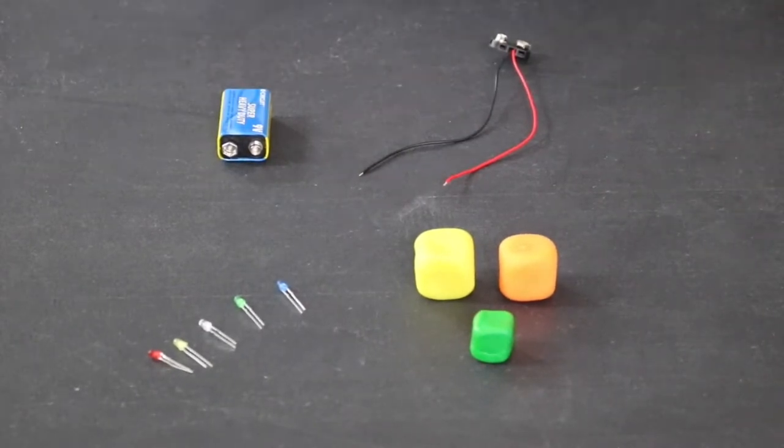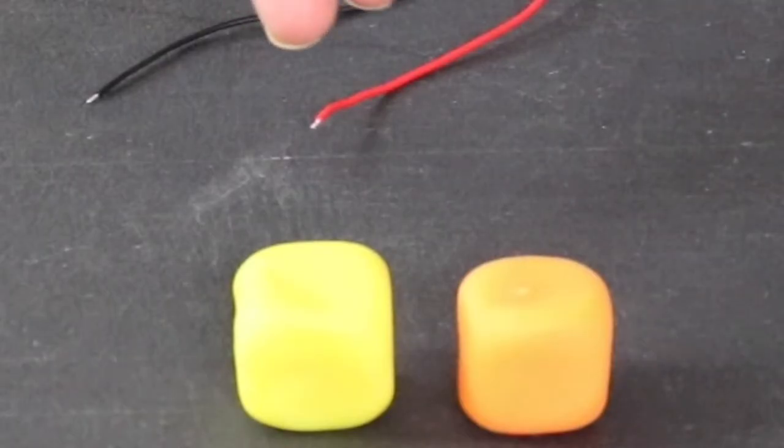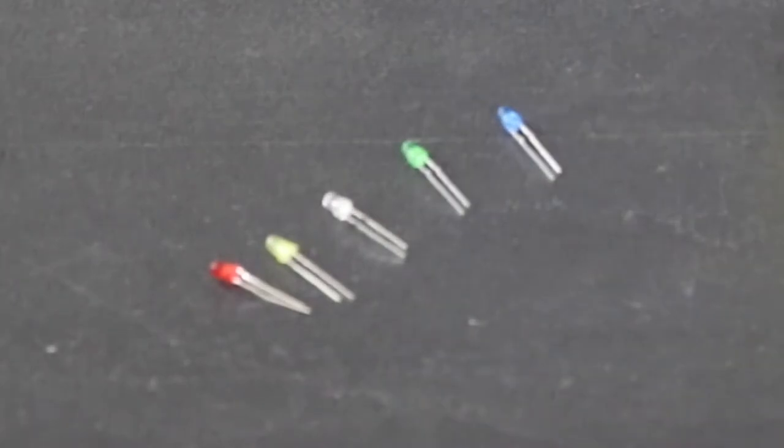For today's demonstration, you will need your electric play-doh kit. It should include a battery, connector, play-doh, modeling clay, and five LED lights.